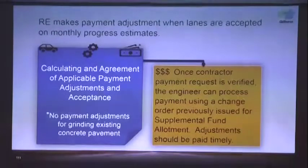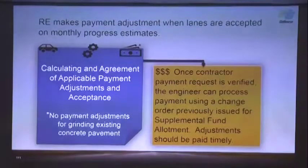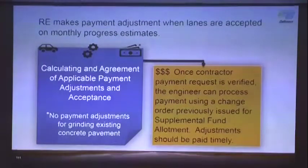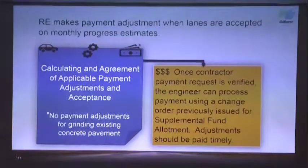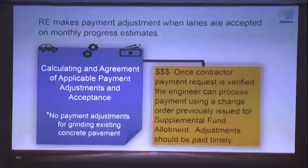The RE will issue a change order for the supplemental fund allotment. If there are pay adjustments, those will be done on a timely basis with the monthly payments. For grinding existing concrete pavement, there are no pay adjustments — only acceptance or rejection.